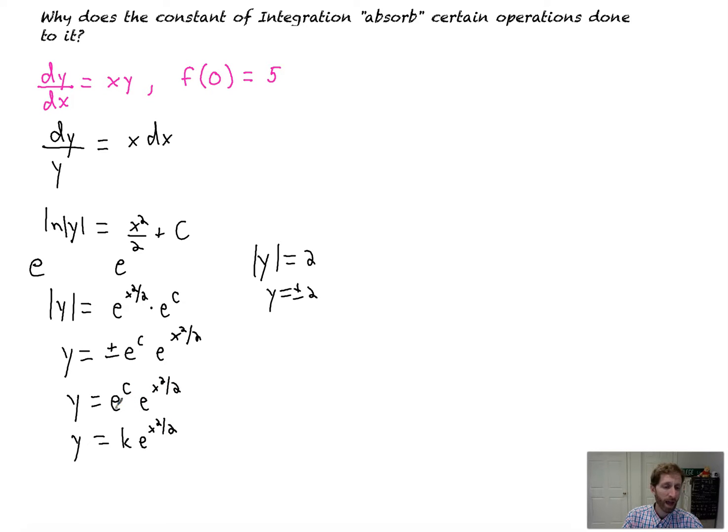I would have to take, after plugging in 5 for y, we'd still have e to the c times e to the x squared, that's 0. Watch what happens. We get 5 equals e to the c. You'd solve both sides by taking the ln. So that's going to be equal to c. But then I'd have to plug it back in here anyway, with ln 5.